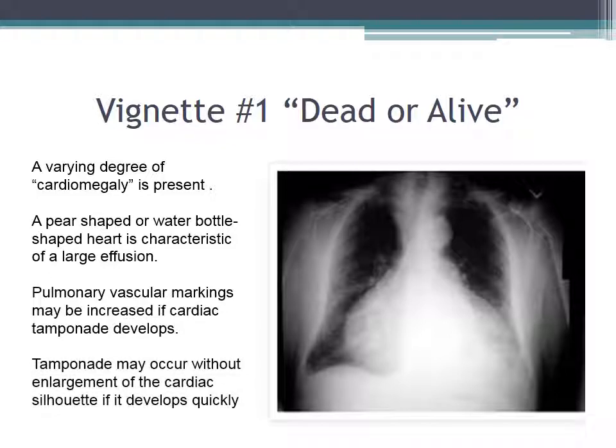One thing to note is that the pericardium is very accommodating. A relatively large effusion over a long period of time may not send the child into tamponade, but a relatively smaller effusion over a shorter period of time can result in tamponade. And of course, there is an absolute capacity of the pericardium to stretch.